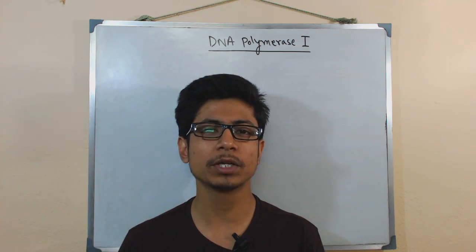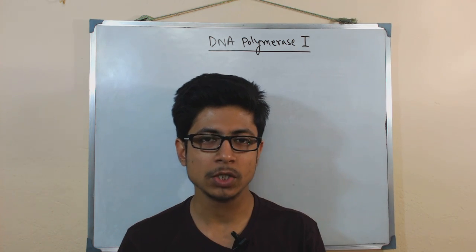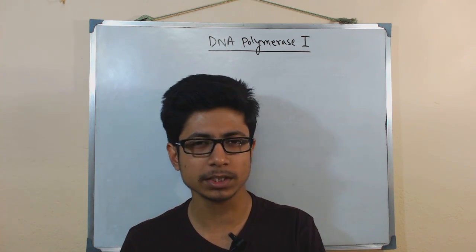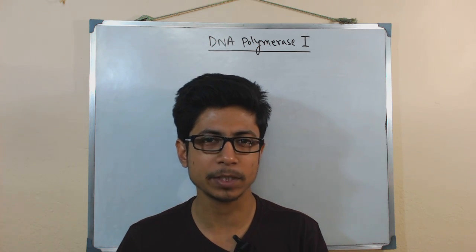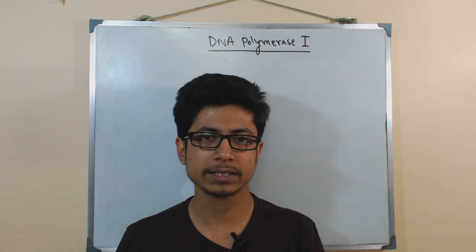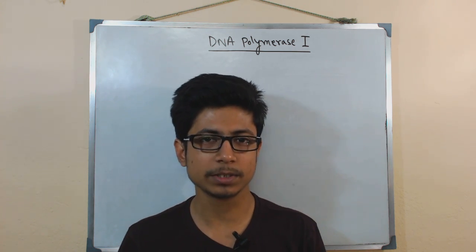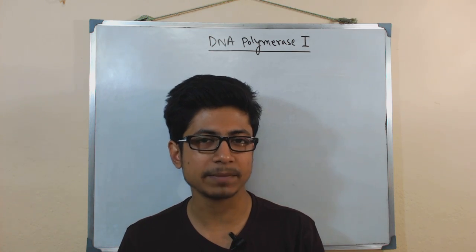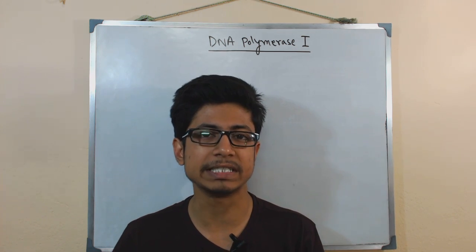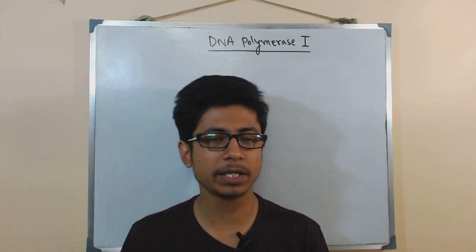Welcome back friends. In this video tutorial we will be talking about DNA Polymerase I — what it is, more about its structure, its function, and its specialty. DNA Polymerase I was discovered by Arthur Kornberg in 1956, and it was the first kind of polymerase enzyme to be discovered. It was found to be associated with DNA replication.